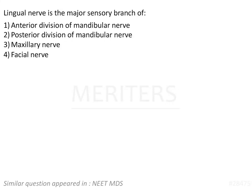The lingual nerve is the major sensory branch of — the options are: anterior division of the mandibular nerve, posterior division of the mandibular nerve, maxillary nerve, and facial nerve. There is a ganglion known as the trigeminal ganglion, which gives three branches: the ophthalmic nerve, the maxillary nerve, and the third one is the mandibular nerve.